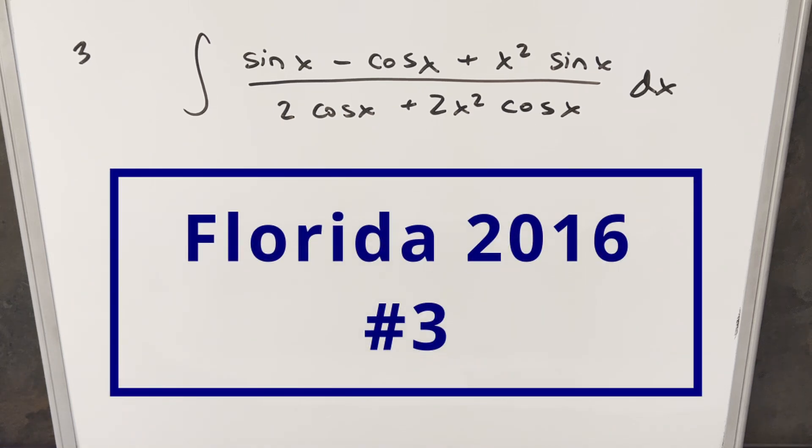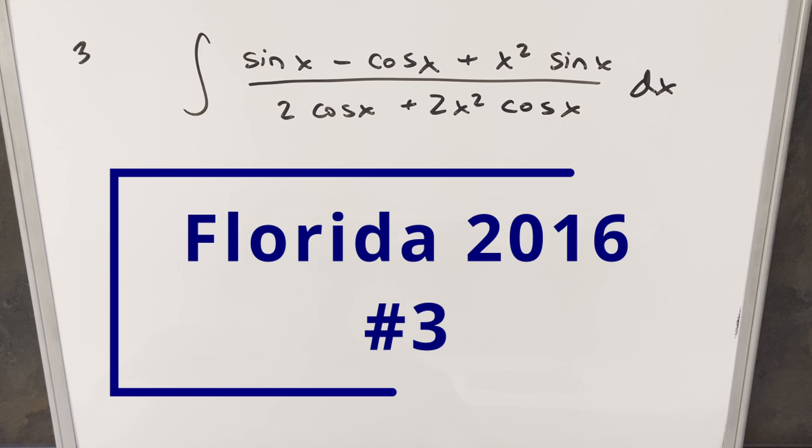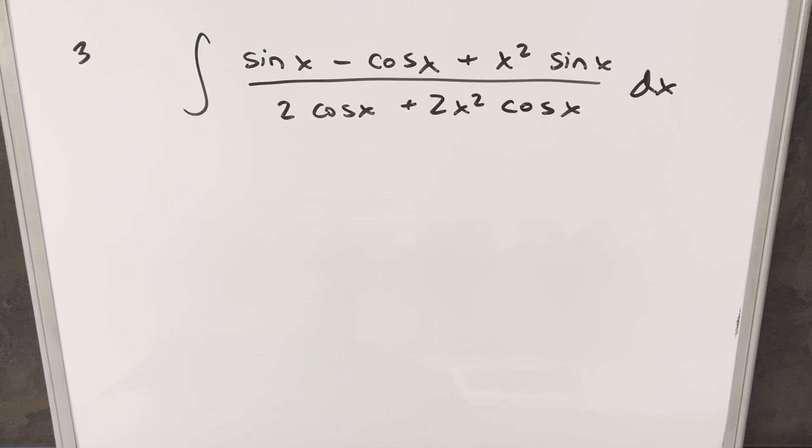Okay, we have a retainer integral from the University of Florida Integration B 2016, problem 3. We have the integral of sine x minus cos x plus x squared sine x over 2 cos x plus 2 x squared cos x dx.